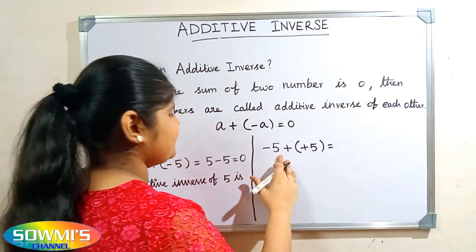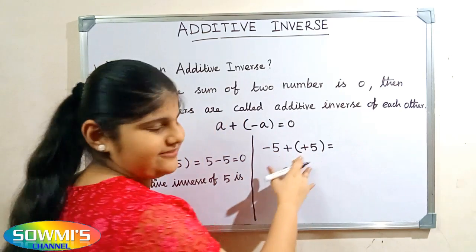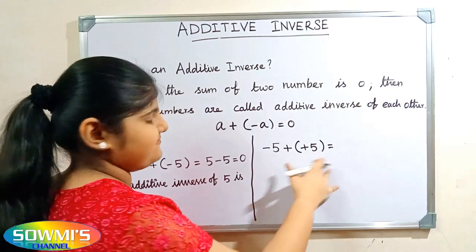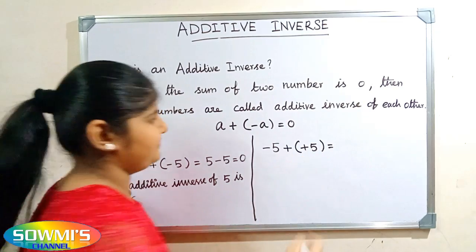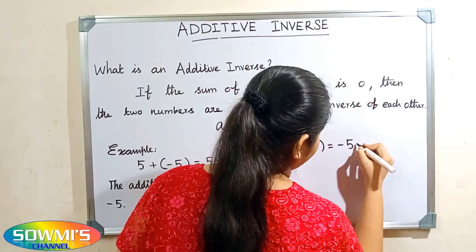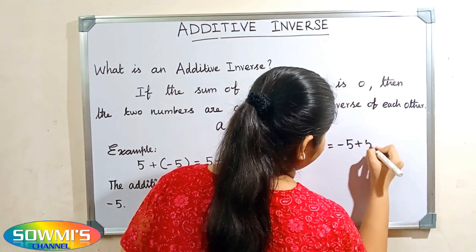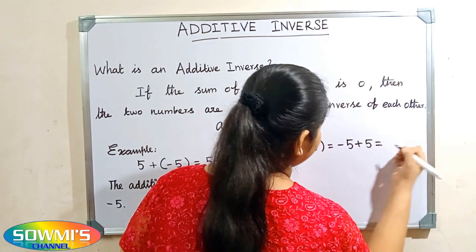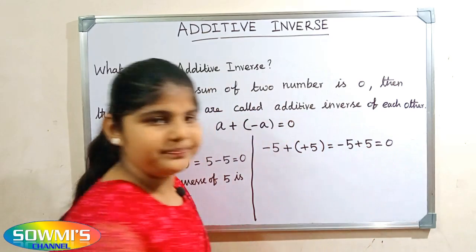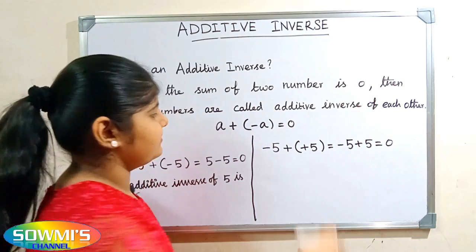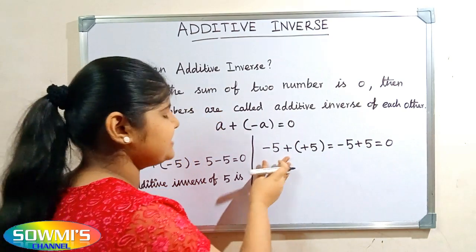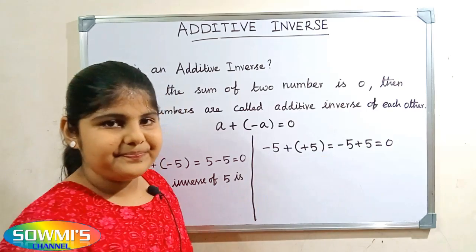Minus five plus into plus will be plus. So, minus five plus five which is equal to zero. So, the additive inverse of minus five is five.